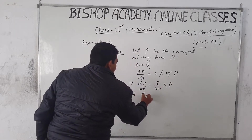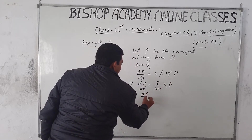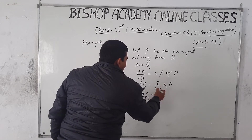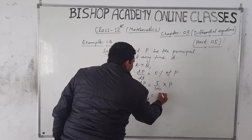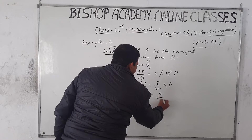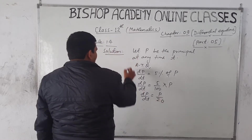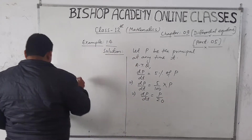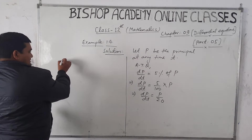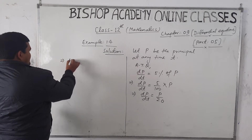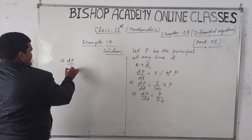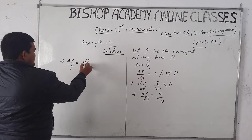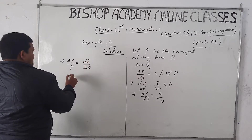This implies dP/dt = P/20. Now, applying variable separation, we get dP/P = dt/20.